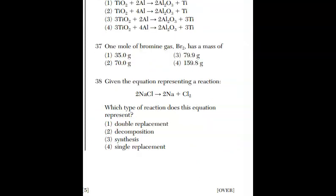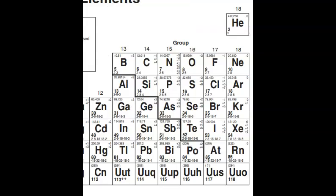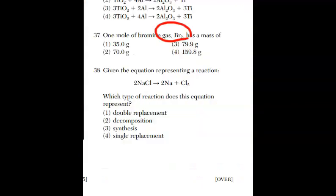Question 37. One mole of bromine gas has a mass of bromine gas. They gave it to us. We didn't even have to realize it was a diatomic. I'm going to go find the atomic mass on the periodic table and just double it. Here we have bromine, 79.9. I'm going to double that for my mass of one mole. When we do that, the answer is 159.8.